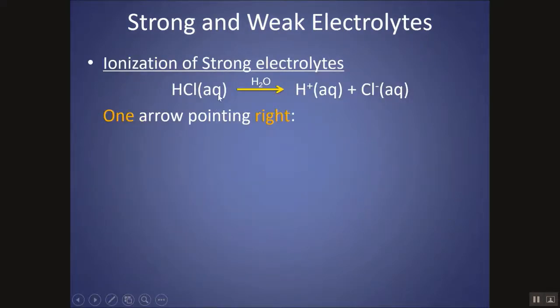We show the ionization of a strong electrolyte with one arrow pointed to the right. So in this situation, HCl is a strong electrolyte. I wouldn't find any HCl molecules together. I would find it all as H+ and Cl- in the solution. All 100% is ionized.